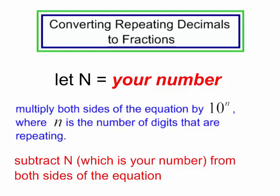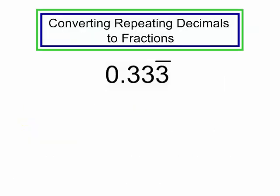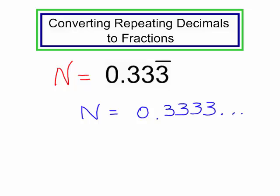So let's convert some repeating decimals to fractions. We begin with the number 0.33333 — yes, that 3 is repeating. I will begin by letting n equal my number, so n is equal to 0.3 repeating. One number is repeating, so I will multiply both sides of the equation by 10. I will now have 10n on the left.